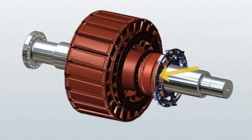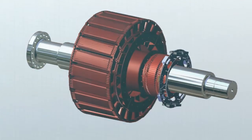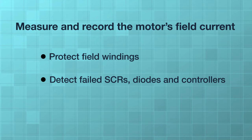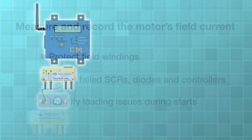By placing the Sync-Rite Plus current sensor on the rotor, you will be able to measure and record the motor's field current remotely. This allows you to protect field windings, detect failed SCRs and controllers, and identify loading issues during starts.